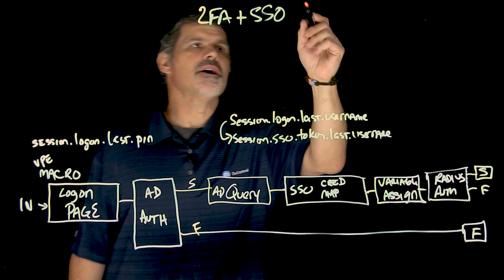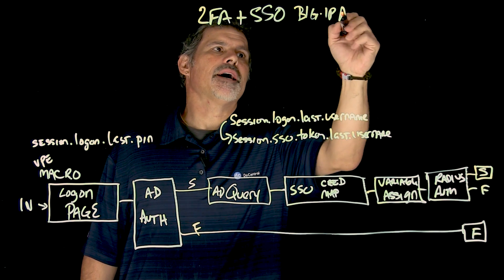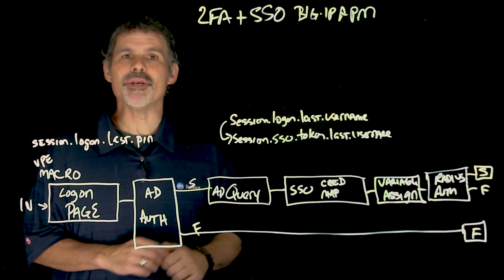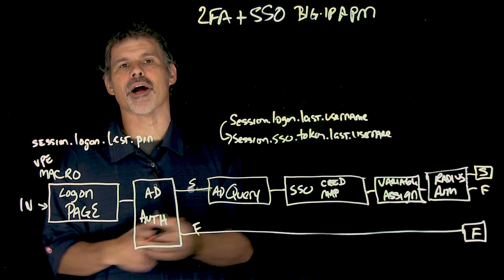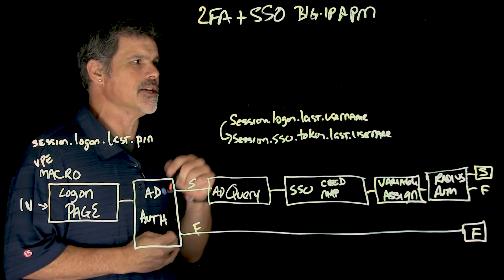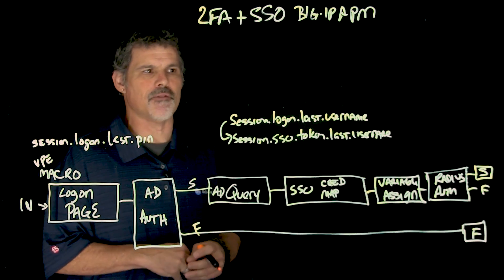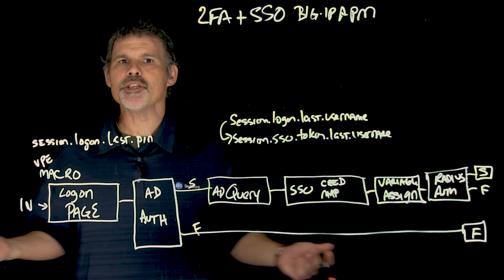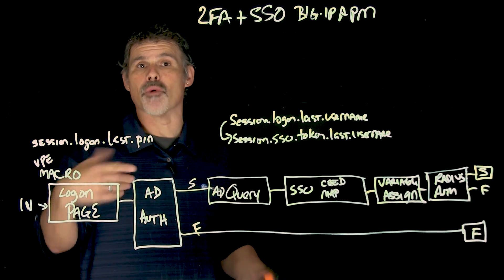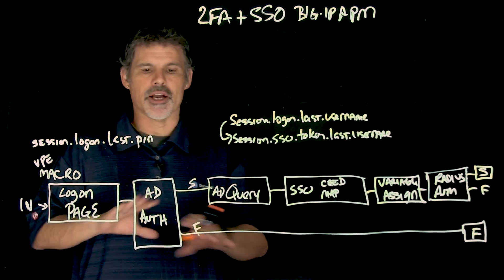Let's light up the solution to two-factor authentication plus single sign-on for Big IP Access Policy Manager. Our answer comes from Mr. Plastic Lee Slaughter, one of our newest MVPs for 2018. Check out his profile — we'll put the question and their profiles in the description. What Mr. Plastic offered up was a Visual Policy Editor macro for Active Directory and single sign-on.